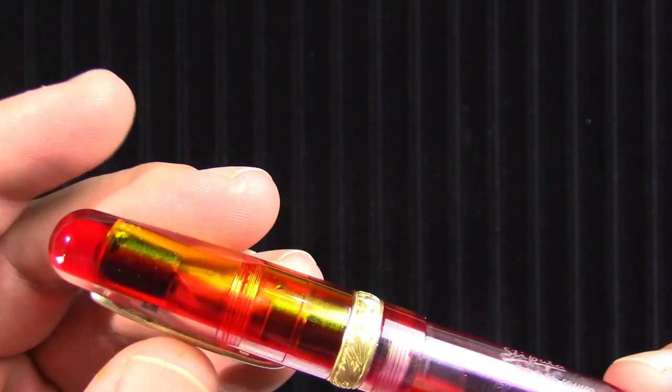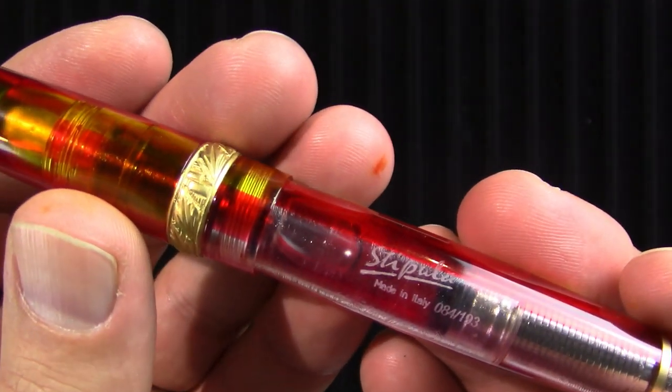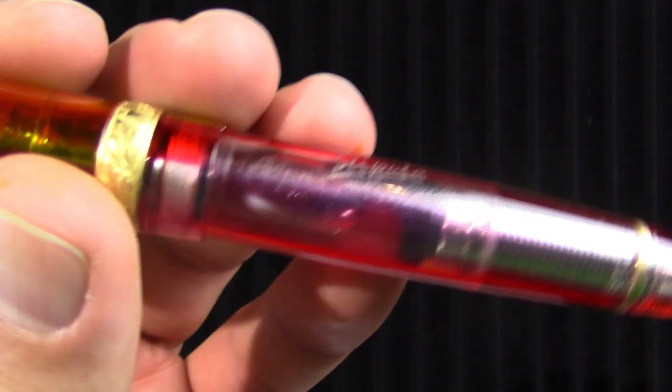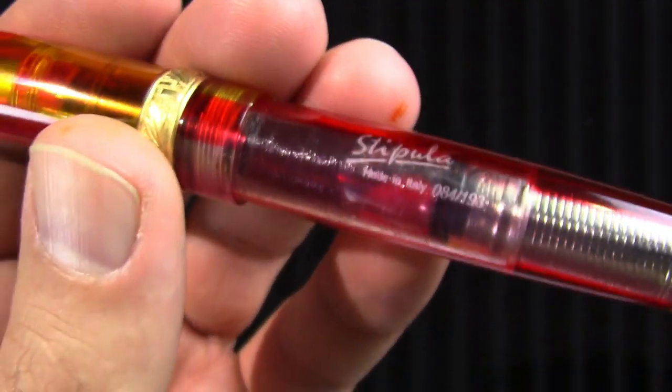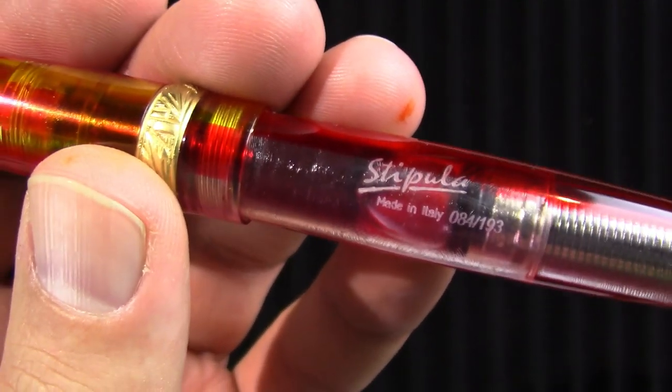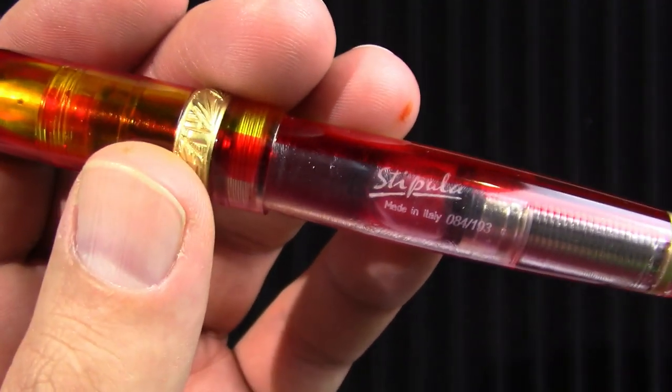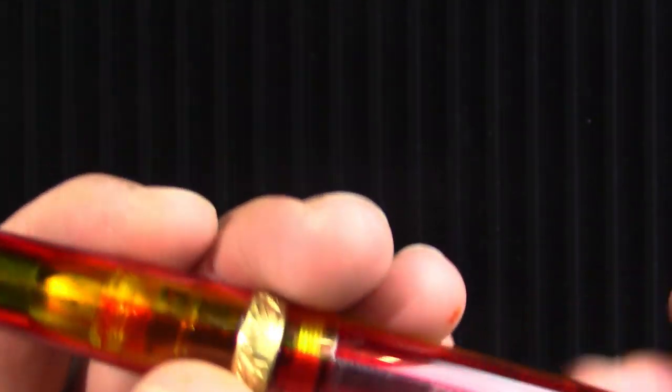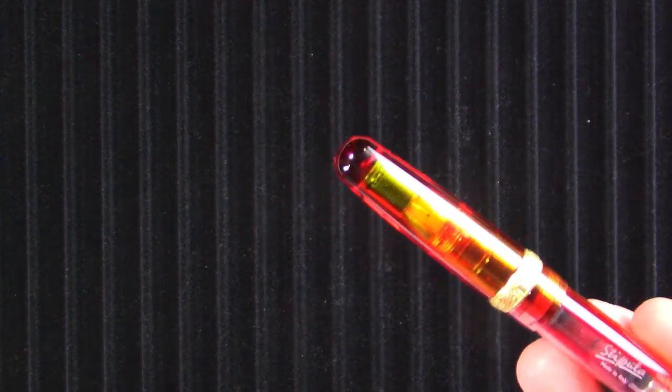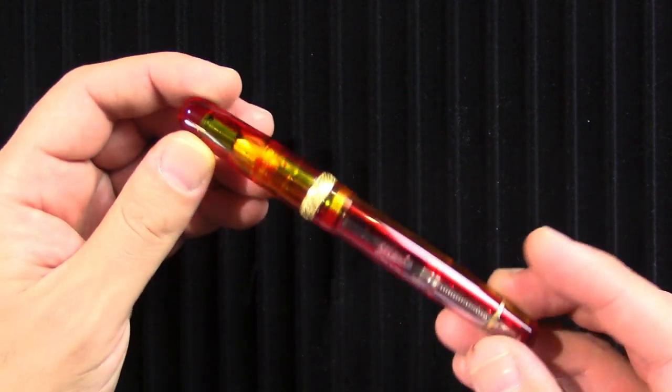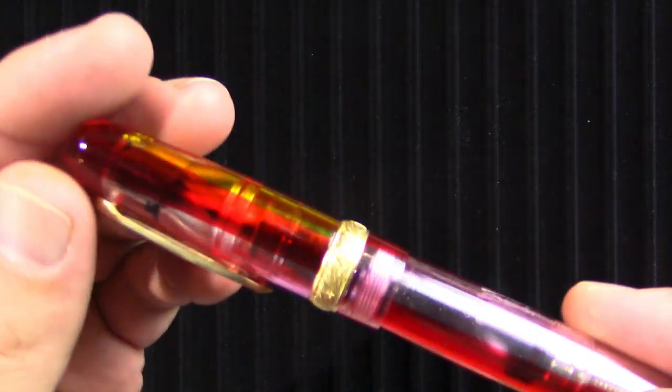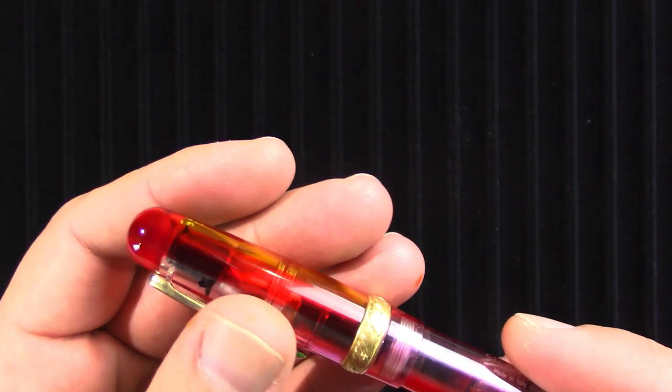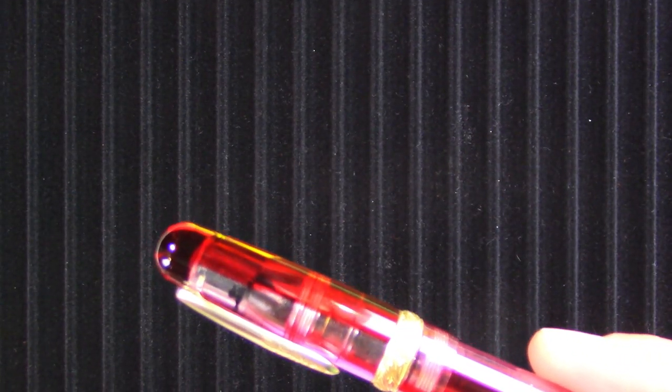So where's this coming from? Etruria is a region of Tuscany. And there were only 193 of this particular pen made, although Etruria is a regular model that Stipula has. Why 193? Well, that seemed pretty random, but apparently that's the number of Florentine hands that go from the base to the top of Duomo, which is the Basilica di Santa Maria del Fiore in Florence, which is the birthplace of the Renaissance. And it was built from 1296 to 1436.